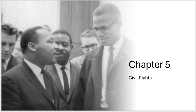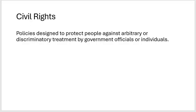So civil rights — what are they? Civil rights are policies designed to protect people against arbitrary or discriminatory treatment by government officials or individuals. In the United States, civil rights has come to mean that you have certain rights even against individuals, which is a good thing. You've got to treat people with dignity and respect, and the government cannot just arbitrarily take rights away.